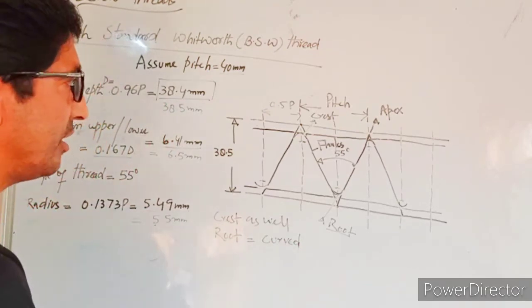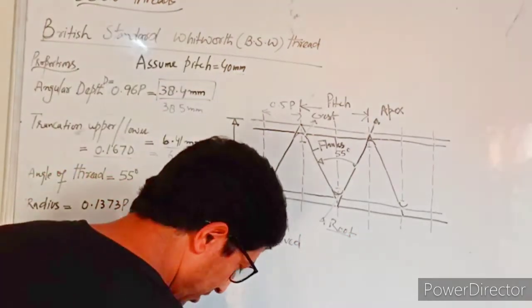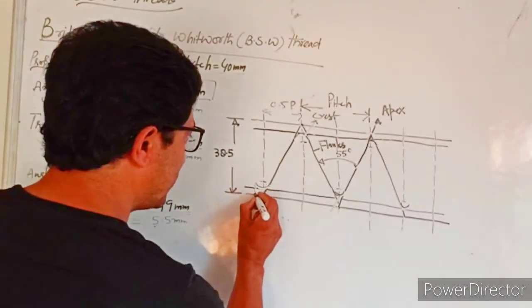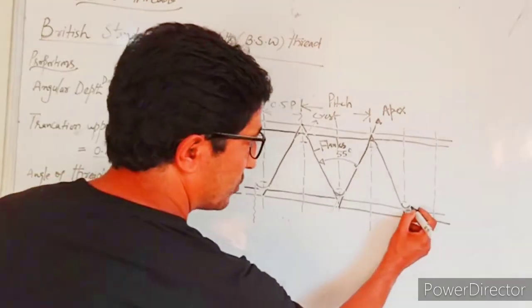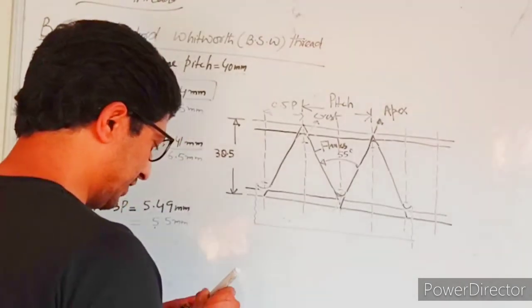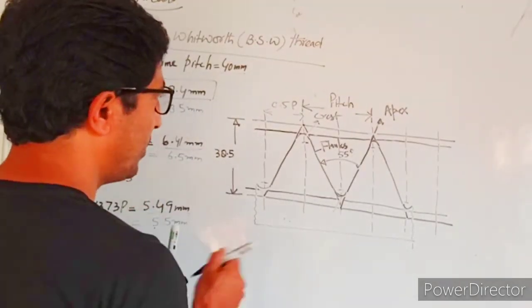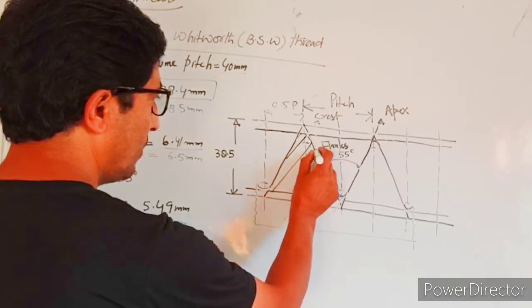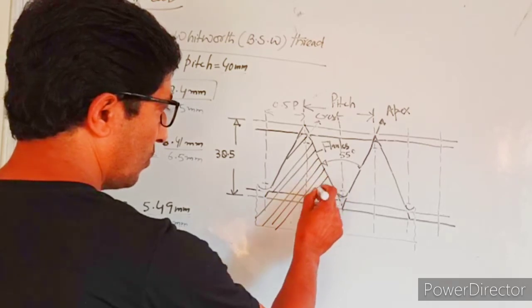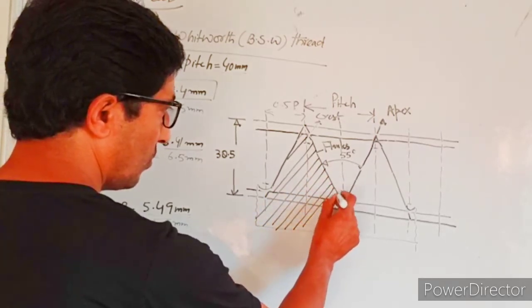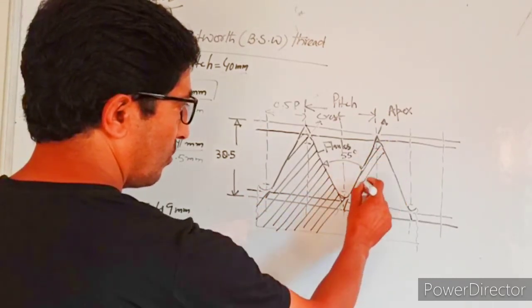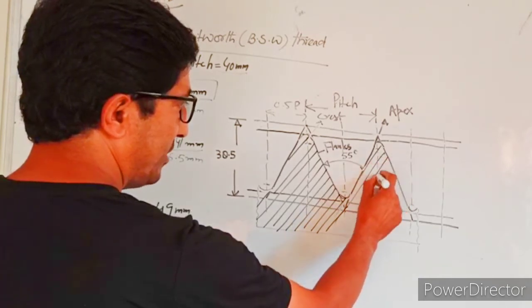What we have done here is the sectional view. The sectional view will be shown here, and then we need to do the hatching part. This part needs to be hatched. You can do the hatching at 45 degrees.